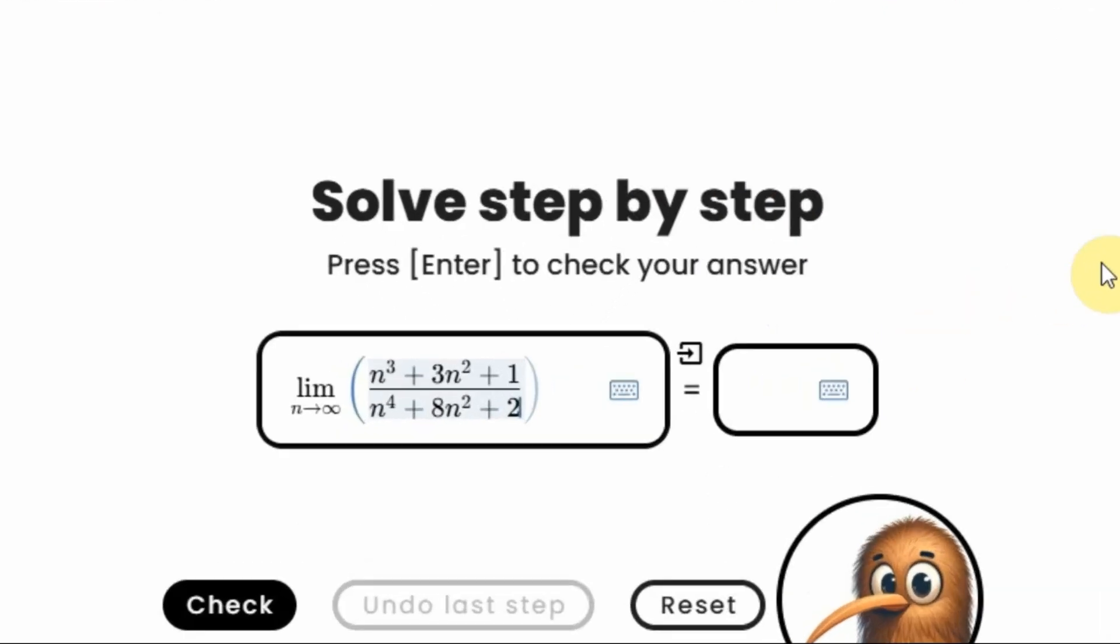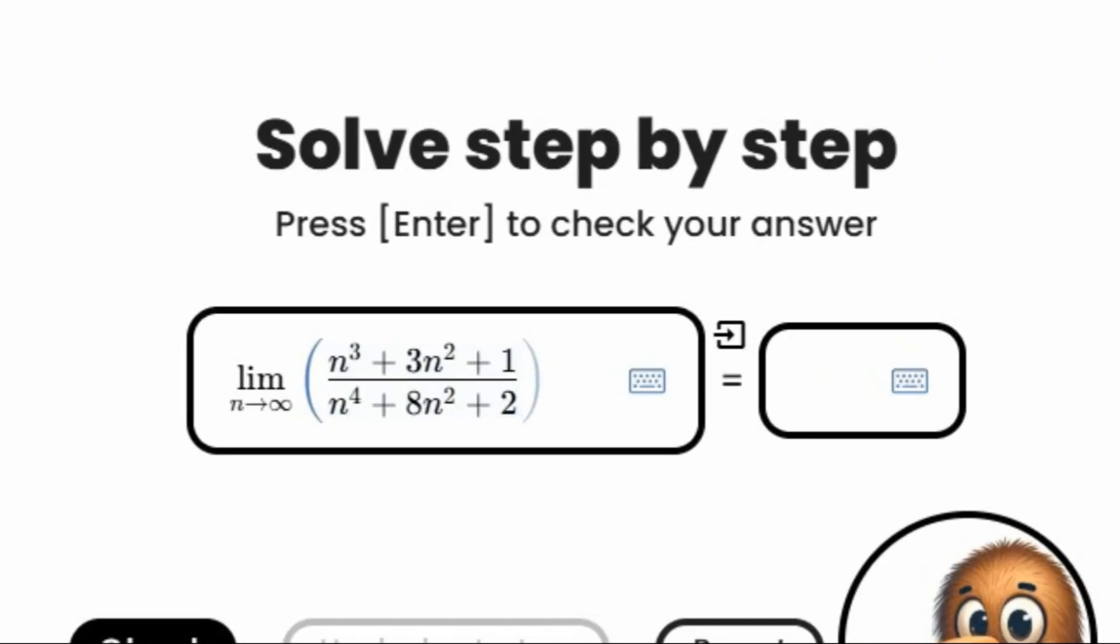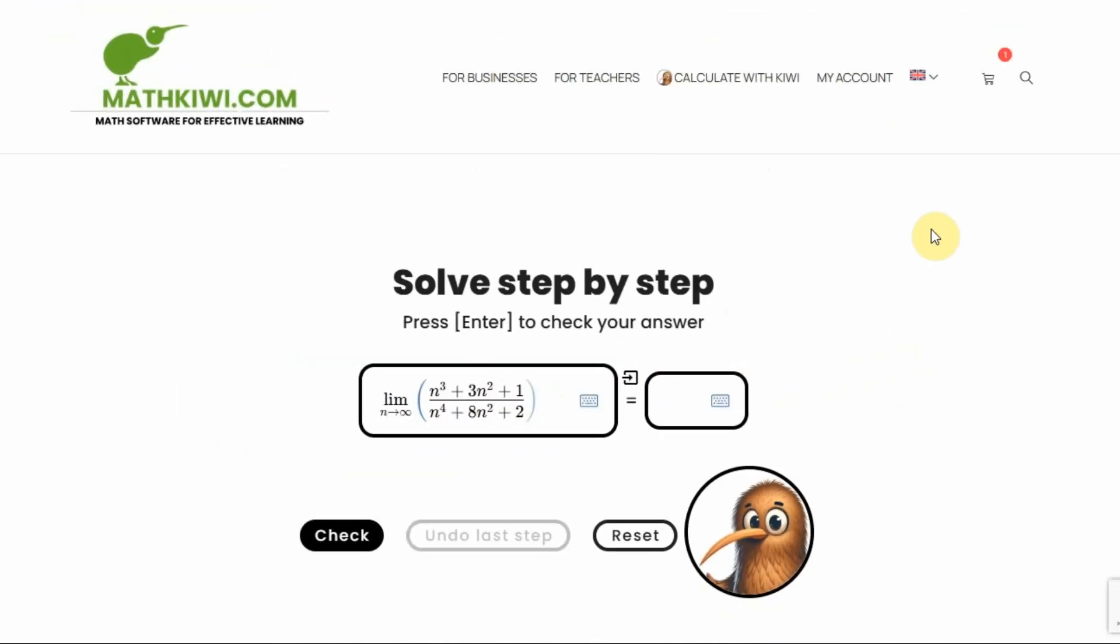Let's take the first step. What can we say about this example? N approaches infinity, so both the numerator and the denominator approach infinity.